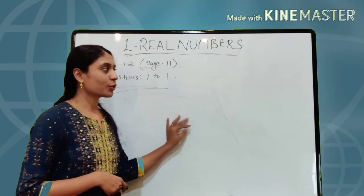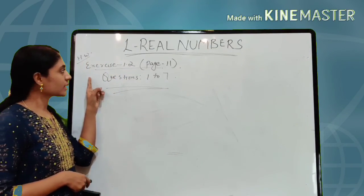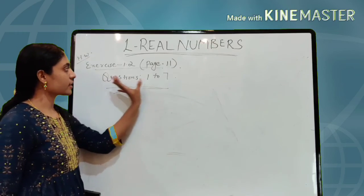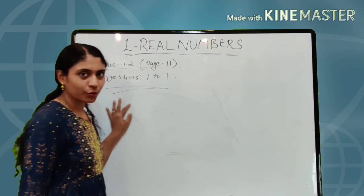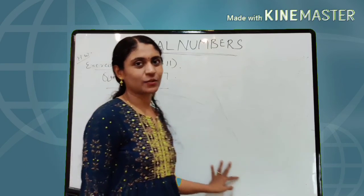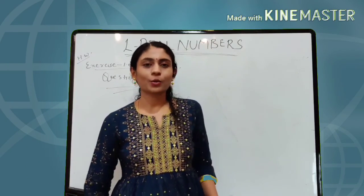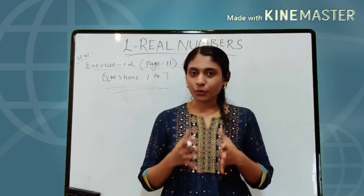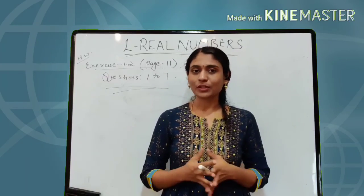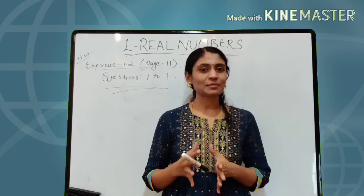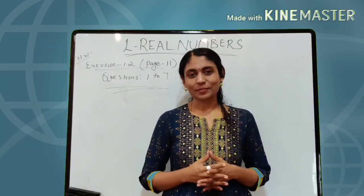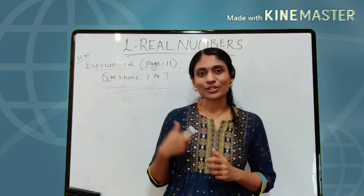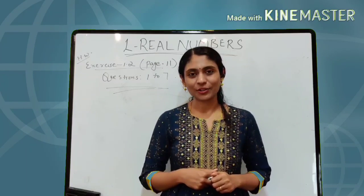Next, find the HCF and LCM of 6, 72, and 120 using the prime factorization method. 6 = 2¹ × 3¹. 72 = 2³ × 3². 120 = 2³ × 3 × 5. HCF: common factors are 2 and 3; smallest powers are 2¹ and 3¹, so HCF = 2 × 3 = 6. LCM: greatest powers are 2³, 3², and 5¹, so LCM = 8 × 9 × 5 = 360. There is homework for you from exercise 1.2, page 11, questions 1 to 7. We'll discuss this in the next video. Hope you enjoyed the class — please subscribe and share the channel. See you in the next class!